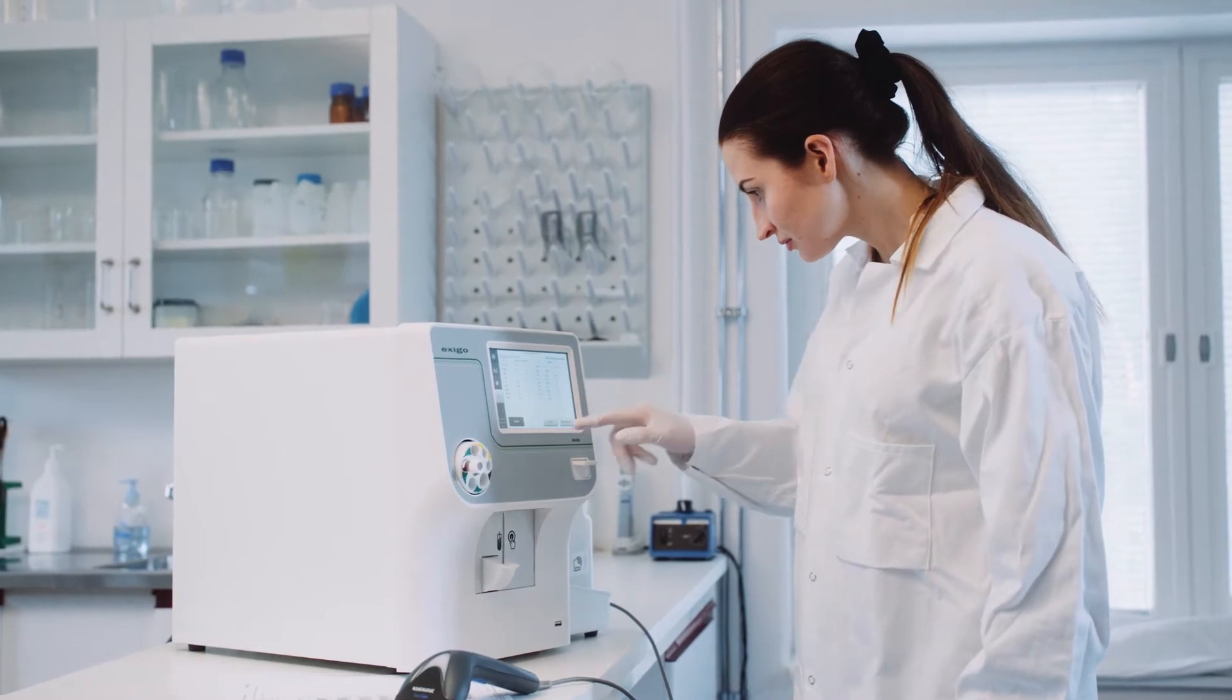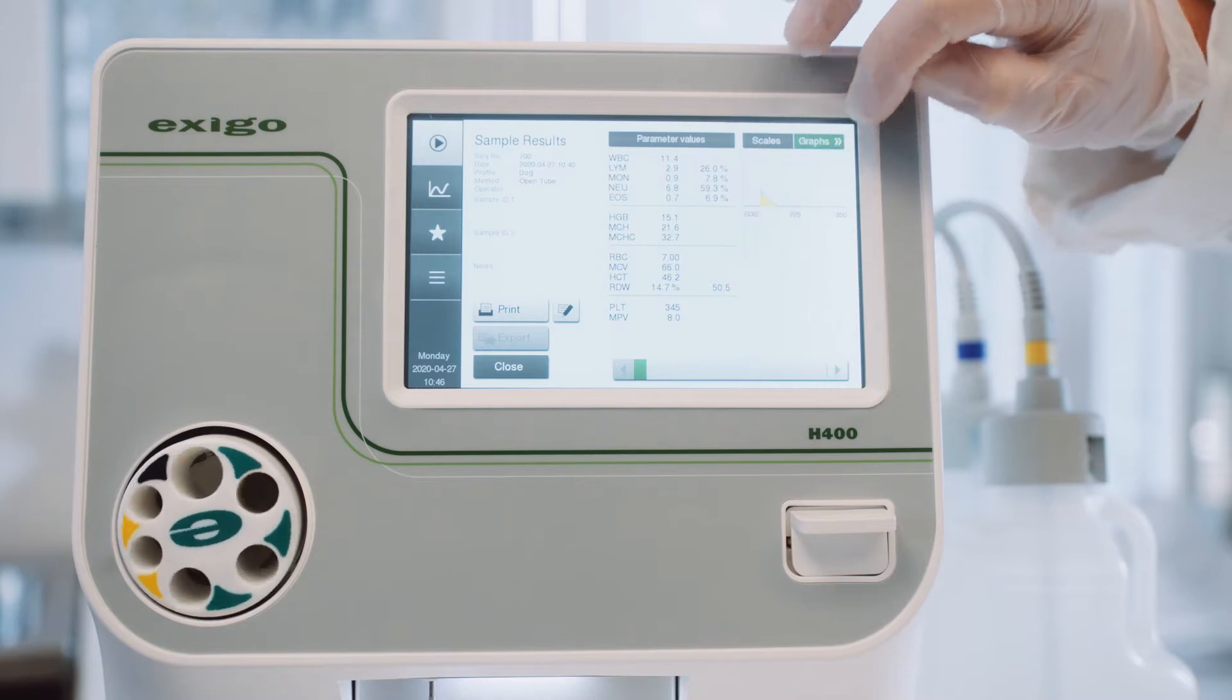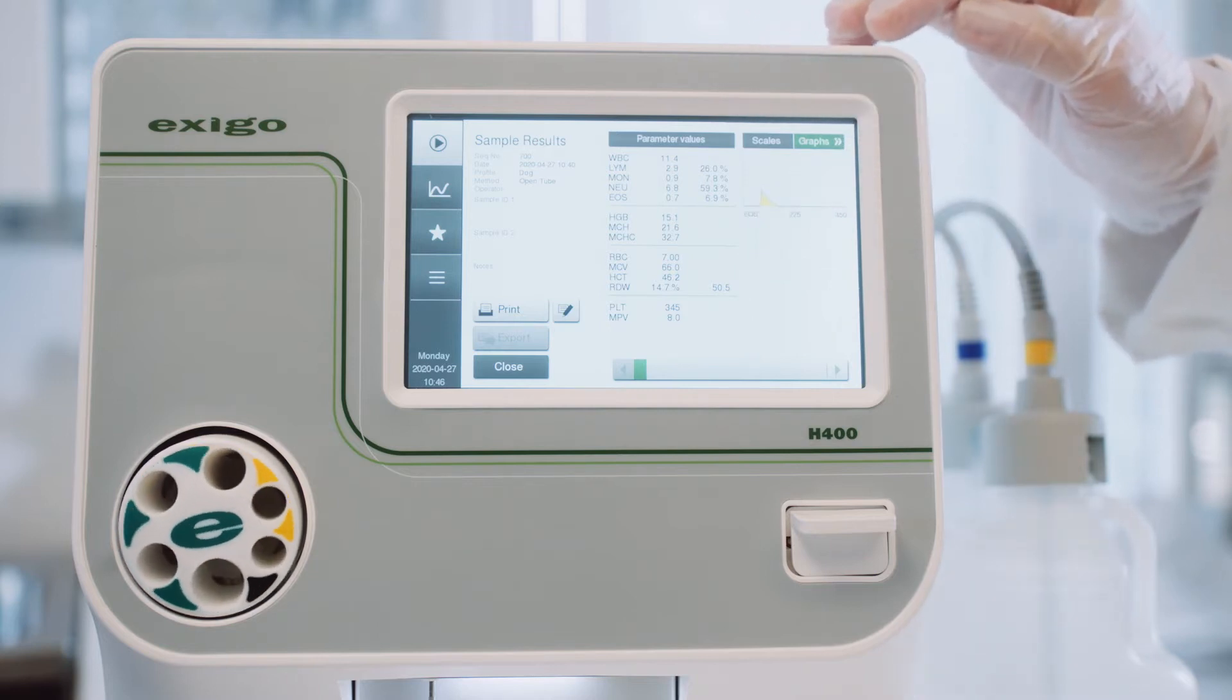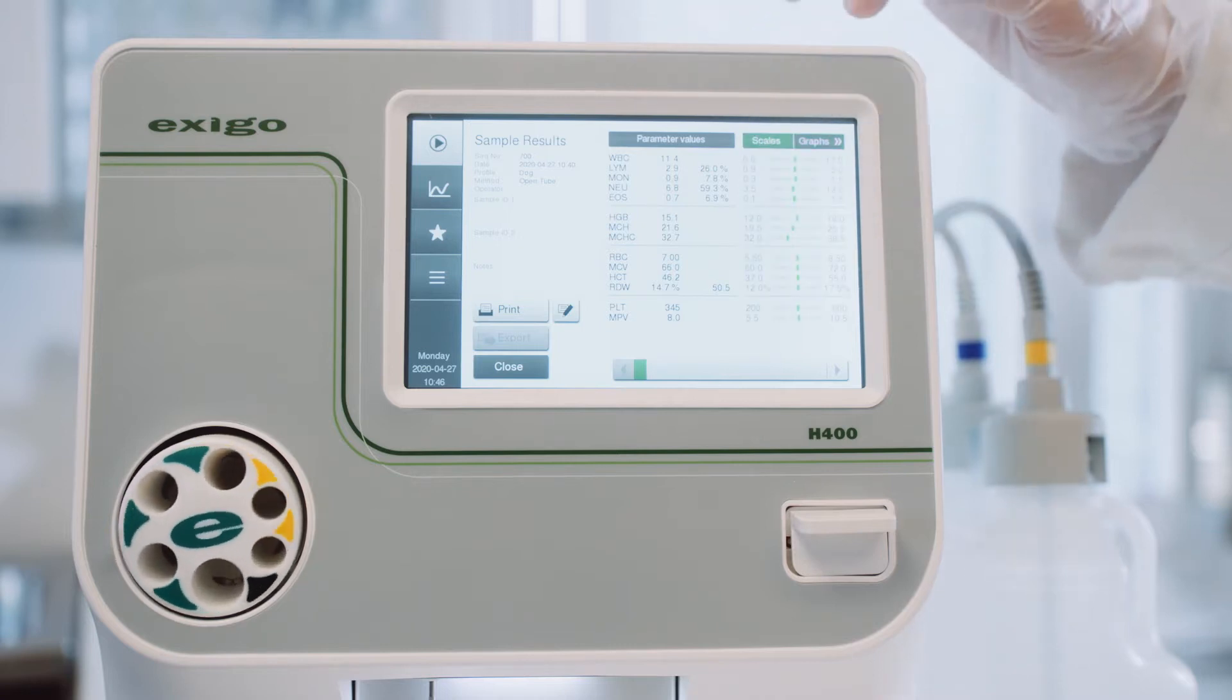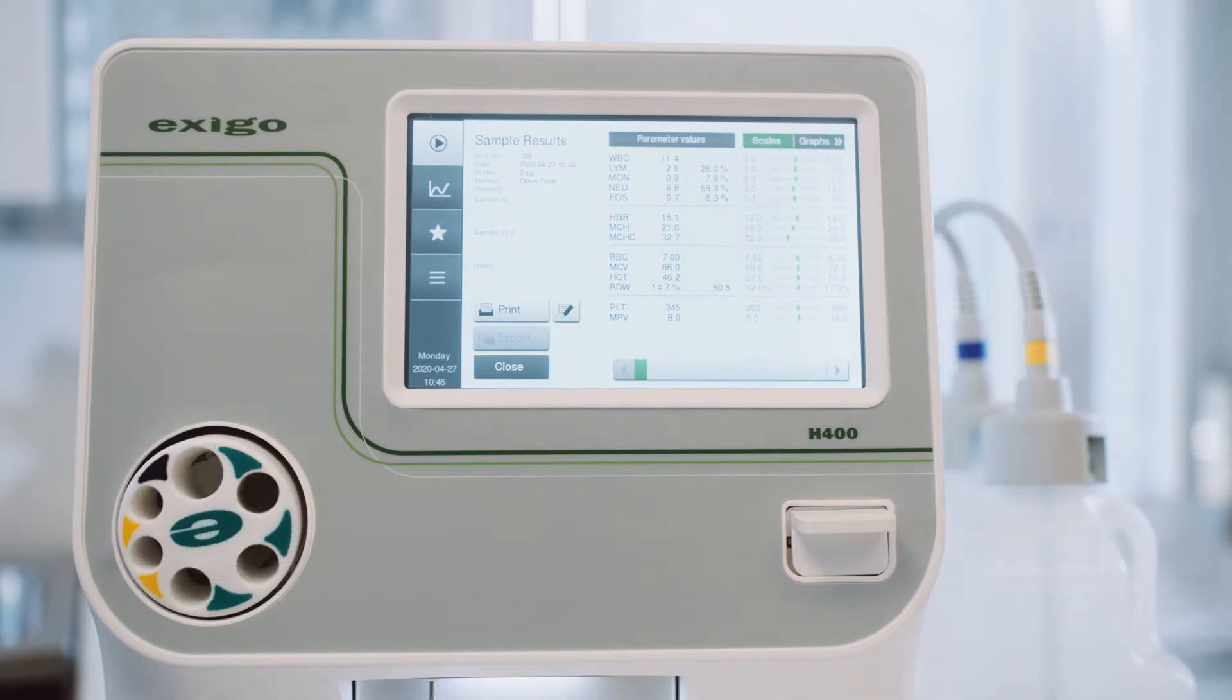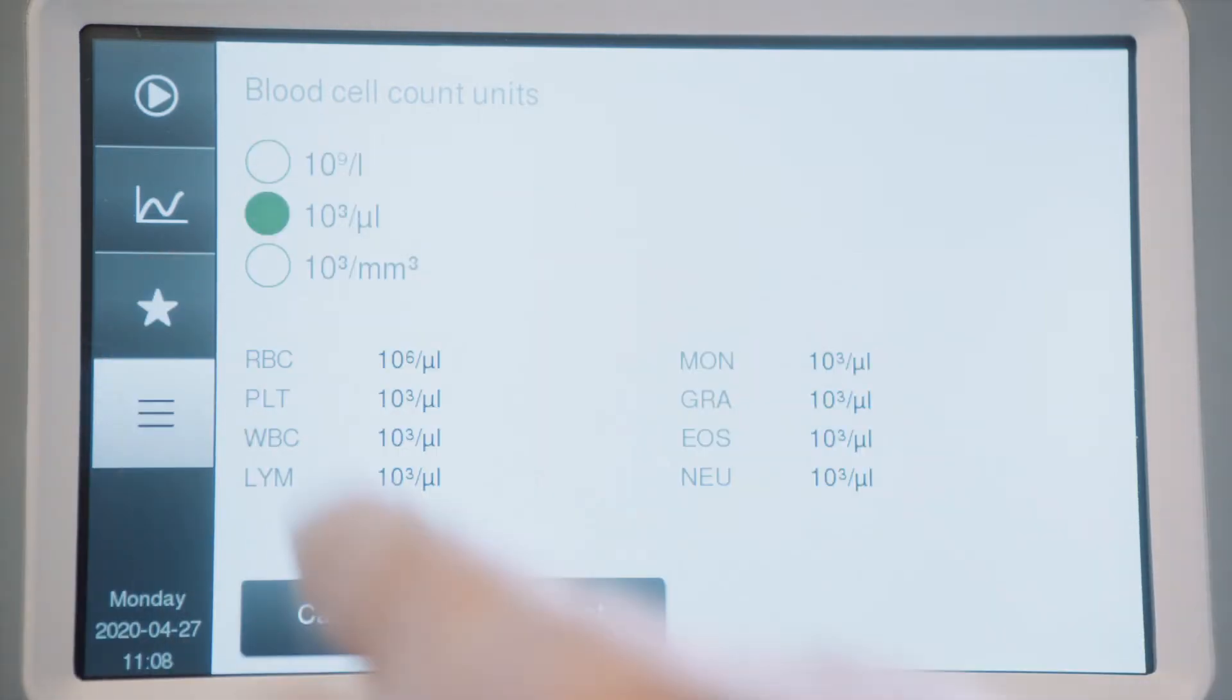Whatever the sampling method, you'll see the results on a full-color touchscreen. Exego H400 lets you decide how you view results. Choose between histogram or reference scale views. The units, parameters, scales, histograms, and orders they are presented in are all settable.